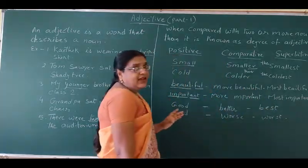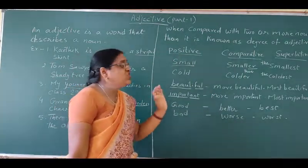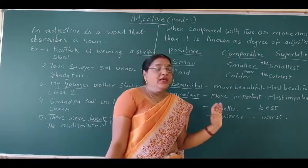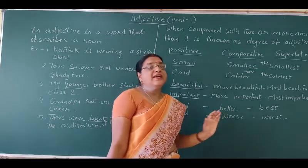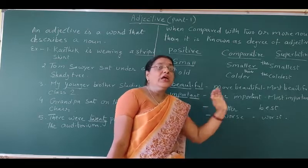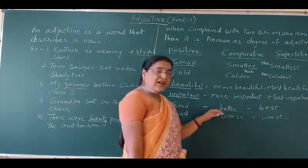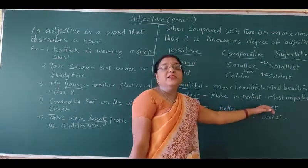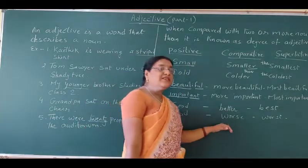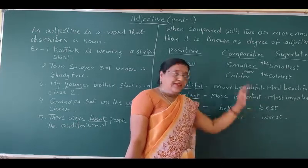Other than this, there are some adjectives which can't be easily changed and don't have any specific rule. These adjectives are known as irregular adjectives. Like, 'good' becomes 'better' in comparative degree and 'best' in supernative degree. Similarly, 'bad' becomes 'worse' in comparative degree and 'worst' in supernative degree.